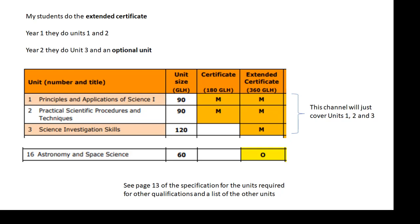My students do the extended certificate. This is BTech Applied Science, the Edexcel Pearson course. On the extended certificate, they do it over two years. In year one, they do units one and two, and then in year two, they do unit three and an optional unit. If they have me teaching the optional unit, they'll probably do astronomy because I'm a physics teacher. There's either astronomy or electricity as the two optional physics units.